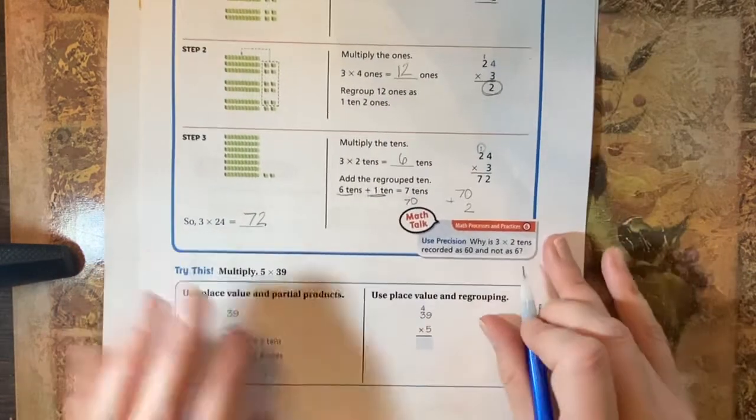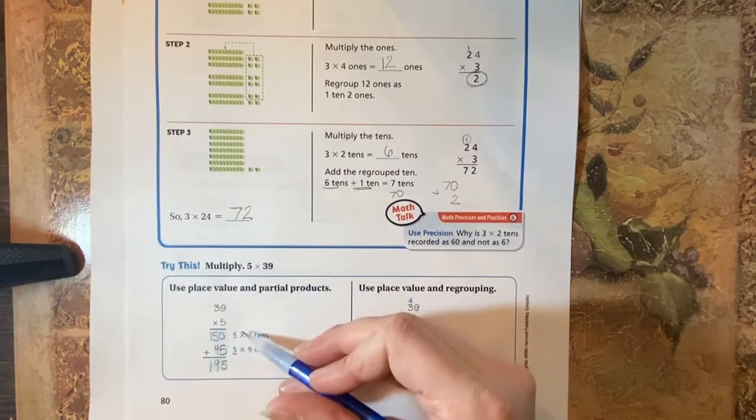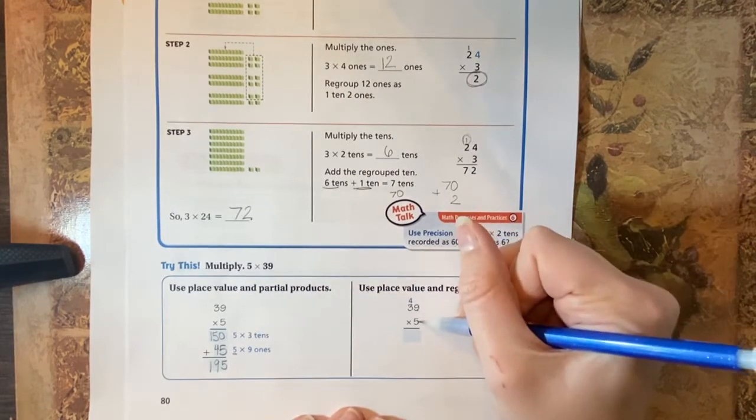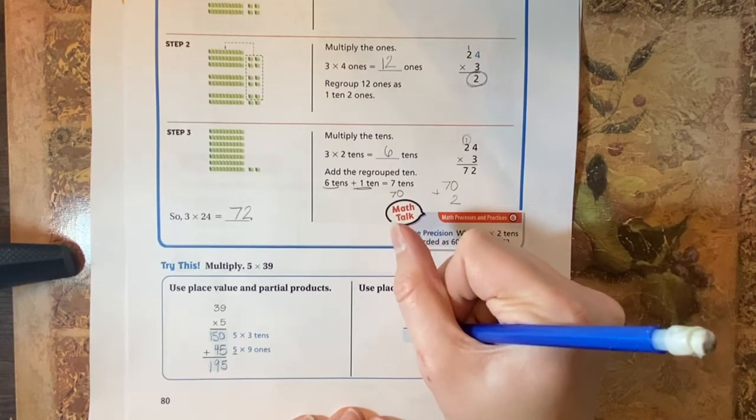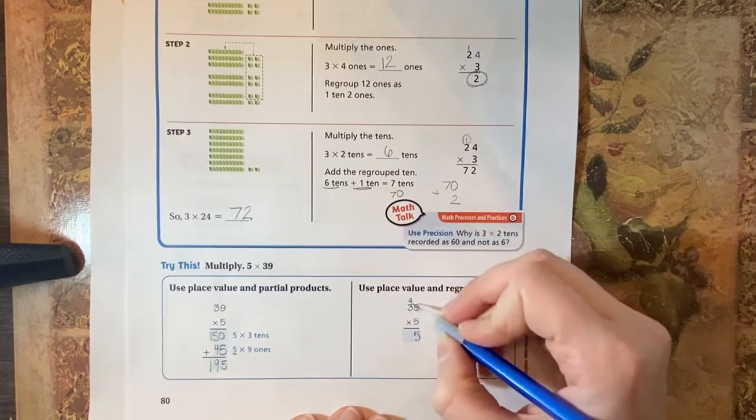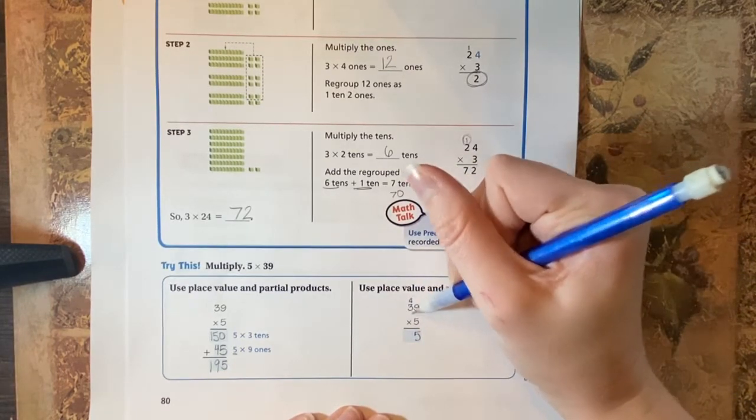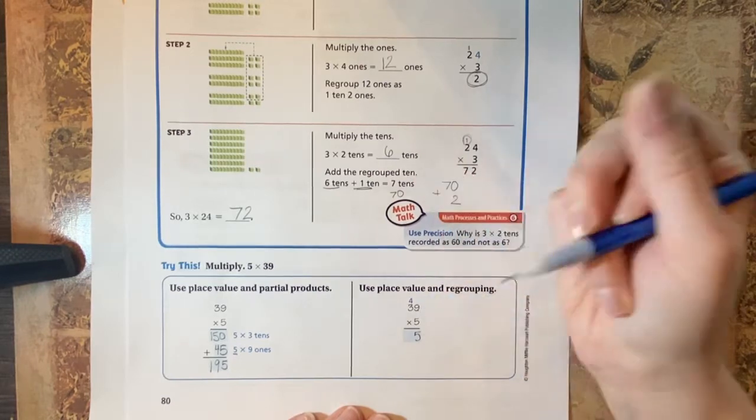Now, if I were to do that a different way, I would start in the ones place here. Start in the ones place, nine times five, which I know is 45. So I write the five here and the four is regrouped. It's already written up here for me. Then I do the tens place. I do three tens times five, three times five is 15.